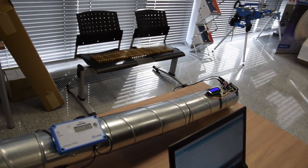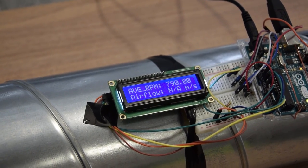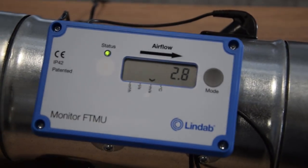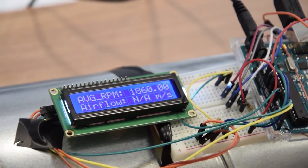Now that both devices are mounted in line and connected to HVAC fan I just need to gather data with different airflow speeds and set the conversion rate from RPM to airflow on my makeshift device.